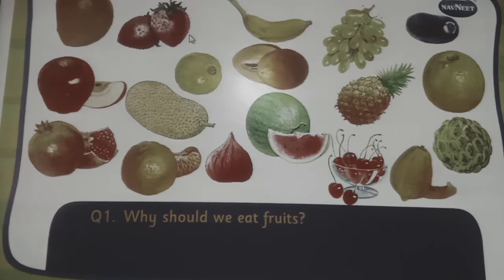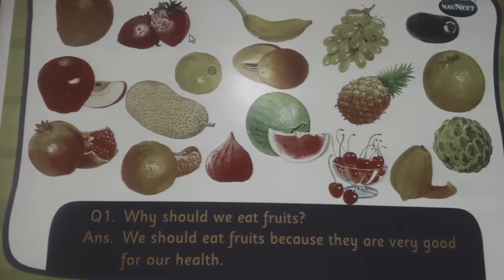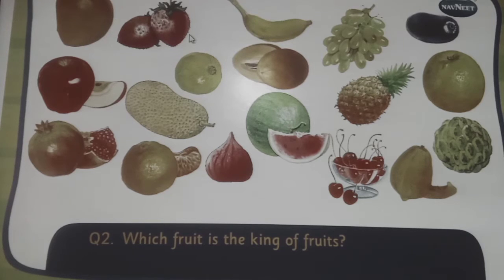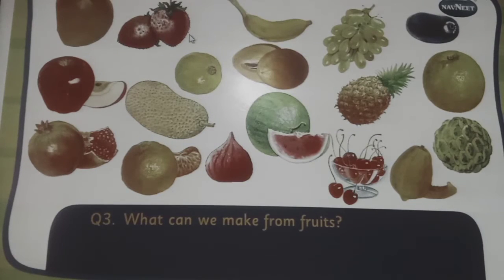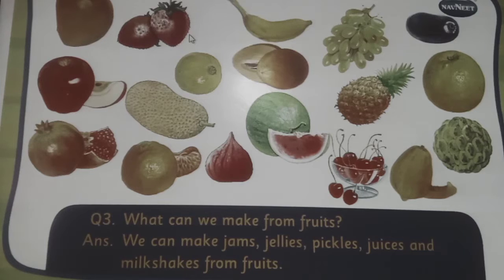Answer the following questions. Why should we eat fruits? We should eat fruits because they are very good for our health. Which fruit is the king of fruits? The mango is the king of fruits. What can we make from fruits? We can make jams, jellies, pickles, juices and milkshakes from fruits.